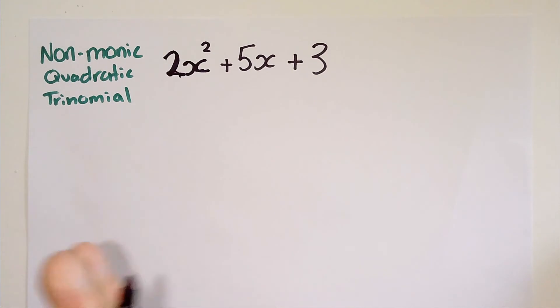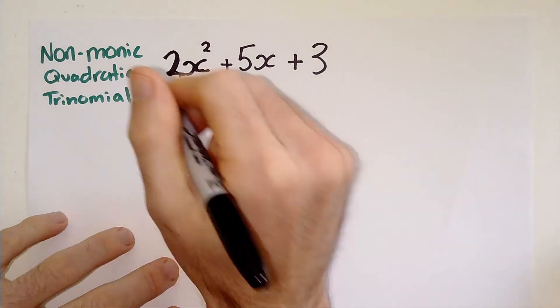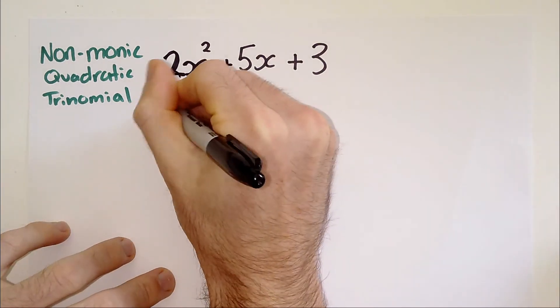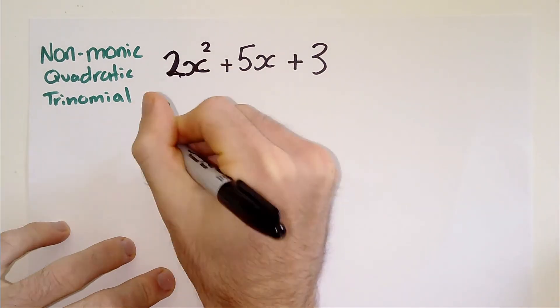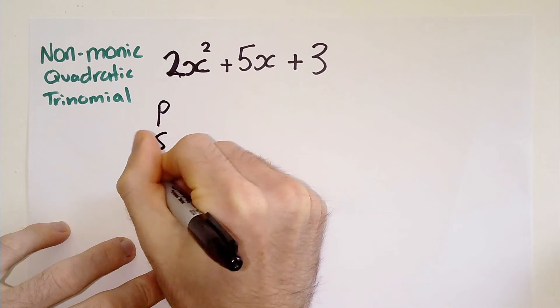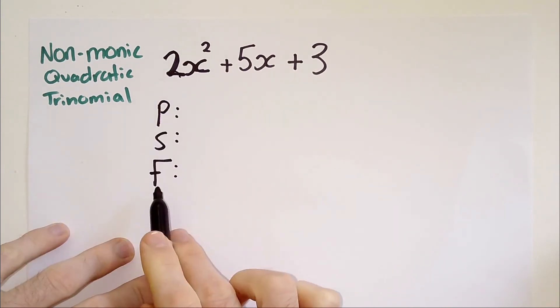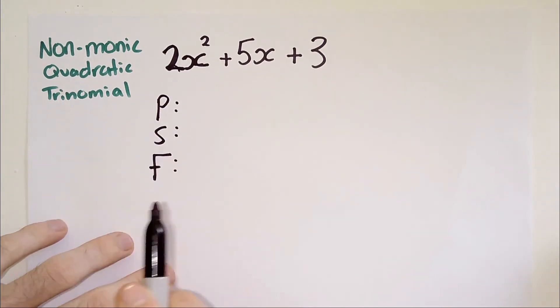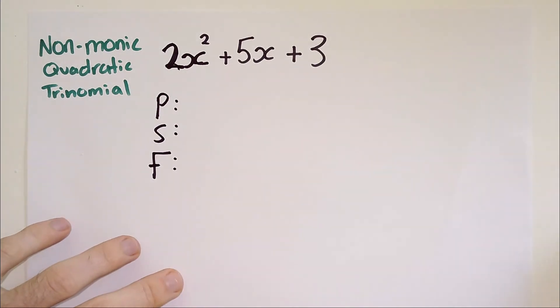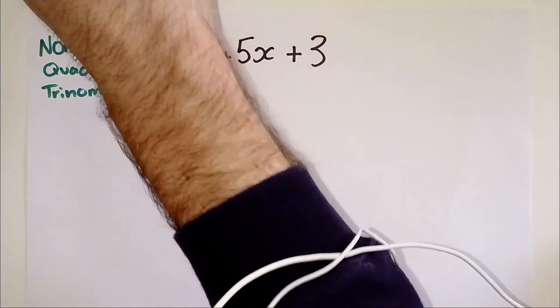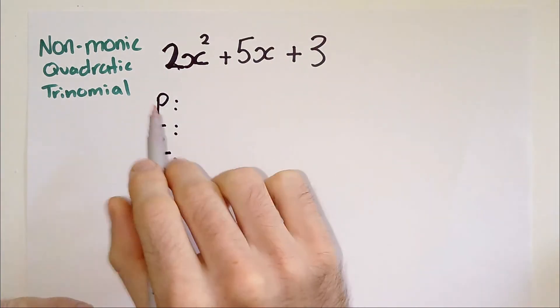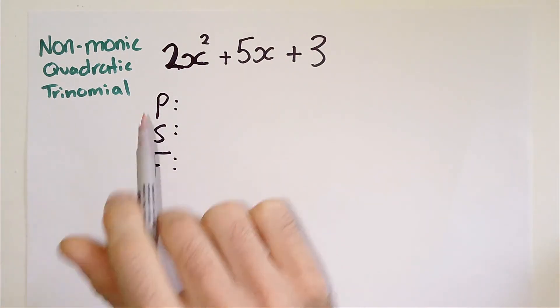So given all of those conditions, we use the PSF method. If you've watched my video on monic quadratic trinomials, you'll be familiar with the PSF method, which means product, sum, and factors, but we're going to apply it in a slightly different way.